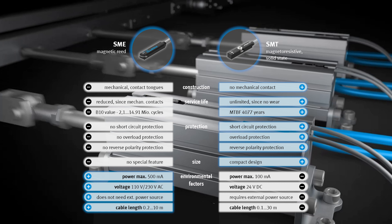In summary, the reed sensor SME should therefore only be used in applications where the environmental factors require a reed solution. Otherwise, it is recommended to use the semiconductor proximity sensor SMT. The reason for this is its long life and its electrical parameters, such as short circuit and overload protection.